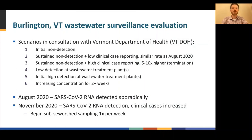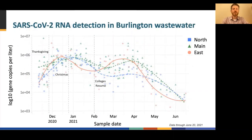Initially, SARS-CoV-2 RNA was detected only sporadically in wastewater. But in November 2020, both the SARS-CoV-2 RNA concentration in wastewater and clinical case counts in Burlington began to rise, prompting the city to begin regularly sampling sub-sewersheds to identify which neighborhoods may have higher levels of infection and should receive increased COVID-19 testing access. In November 2020, increases in SARS-CoV-2 RNA concentrations can be seen on a plot showing a trend analysis that can be performed with wastewater surveillance data.